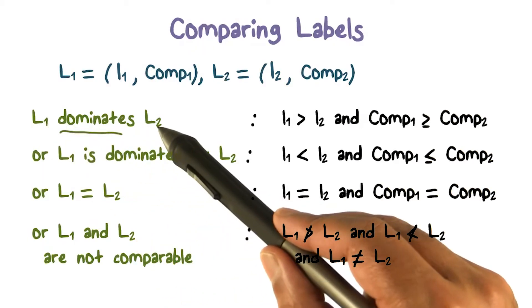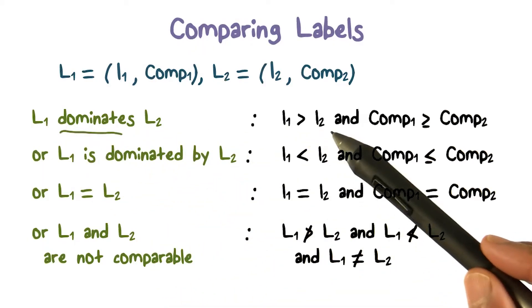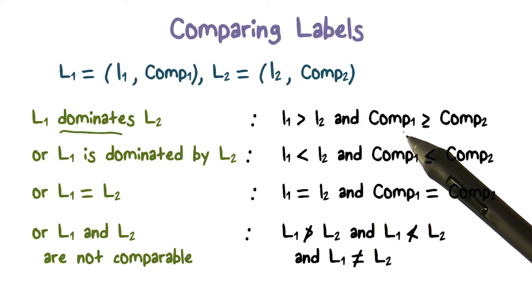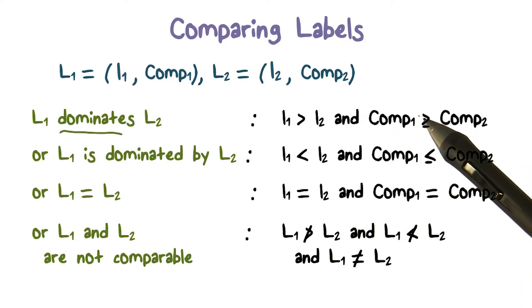So L1 label L1 is going to dominate label L2 if level 1 is greater than level 2. And the categories or the topics that make up compartment 1 contain the topics or categories that are in compartment 2.